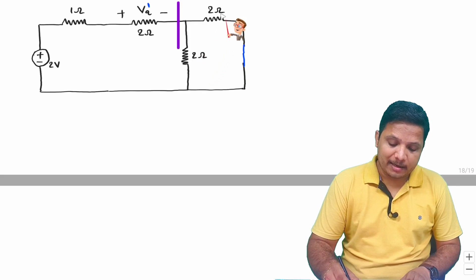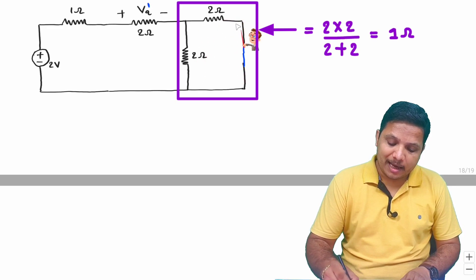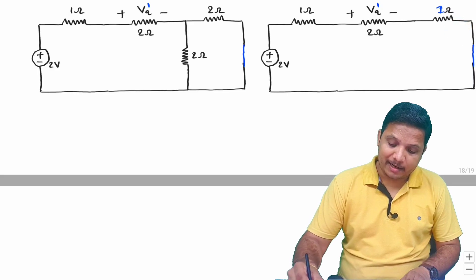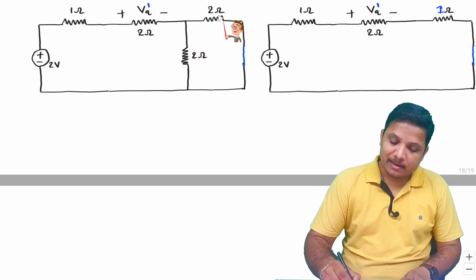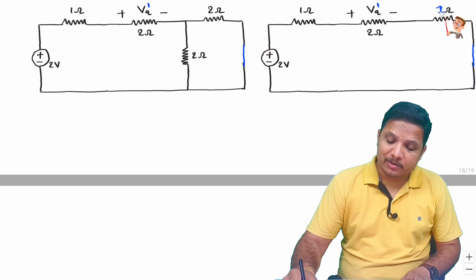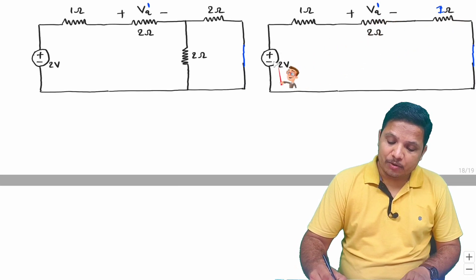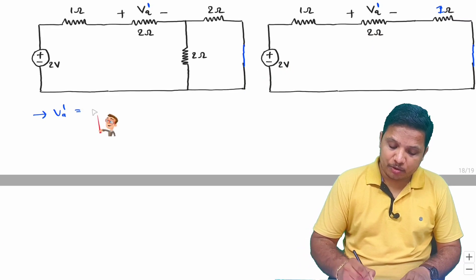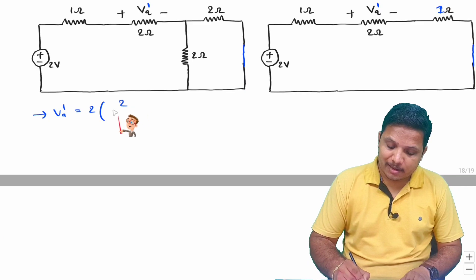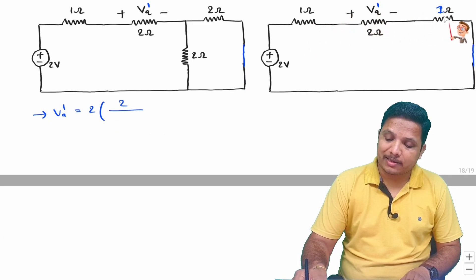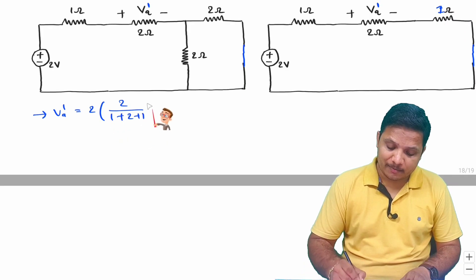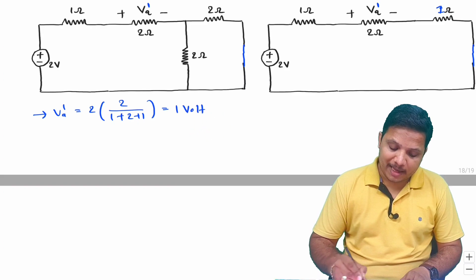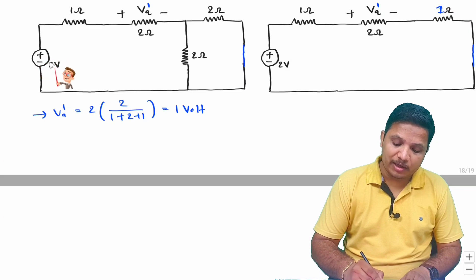To solve Va dash: the two 2 ohm resistors are in parallel combination, which gives 1 ohm. Now it is easy to identify Va dash using the voltage divider rule. Va dash equals total voltage 2 multiplied by this resistance of 2, divided by the algebraic sum of all series resistors: 1 plus 2 plus 1, giving 2 divided by 4 multiplied by 2. That equals 1 volt. So Va dash due to the 2 volt source is 1 volt.